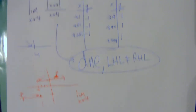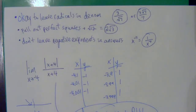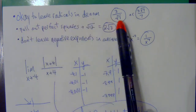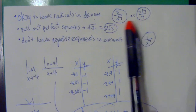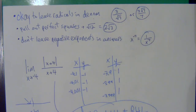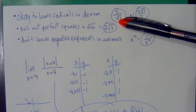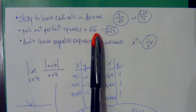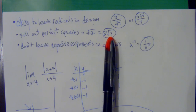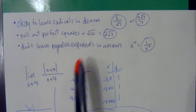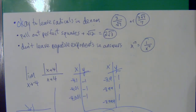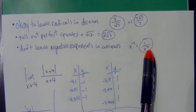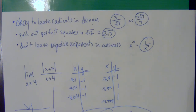Just some rules we'll use throughout the year: it's okay to leave radicals in the denominator — get the exact answer, not the decimal. Always pull out perfect squares, so if your answer is √12, make that 2√3. Also, any time you have a negative exponent throughout the year, get rid of it and make it a positive exponent.